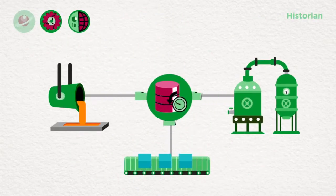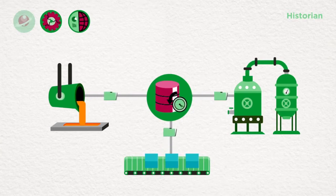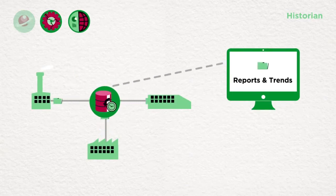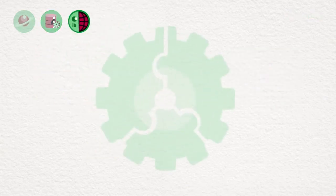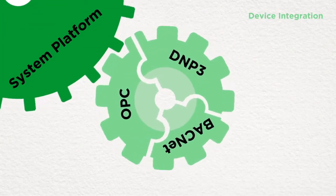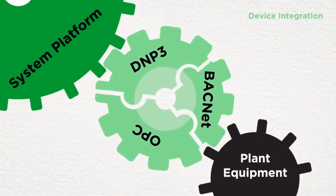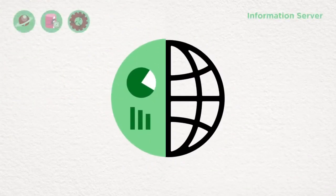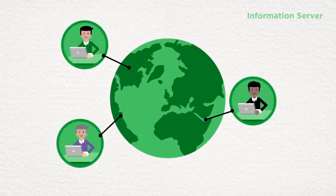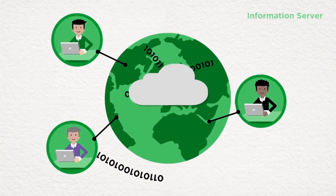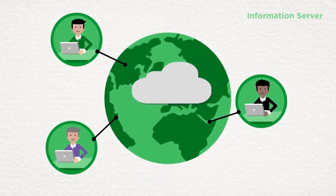The Process Historian is a real-time database that can easily be tiered and scaled from the equipment level to the corporate enterprise, passing valuable data to all connected applications. System Platform's Device Integration provides a wide range of connectivity options, allowing flexible communication with all plant equipment and devices. For easy distribution of performance reporting to key stakeholders, System Platform's Information Server provides consolidated data to a central web location for access around the world.